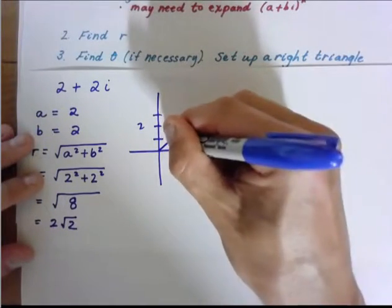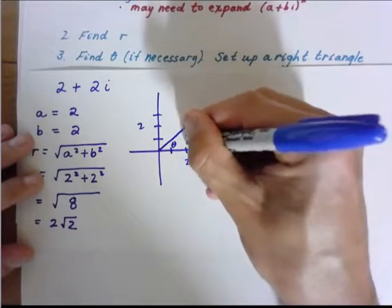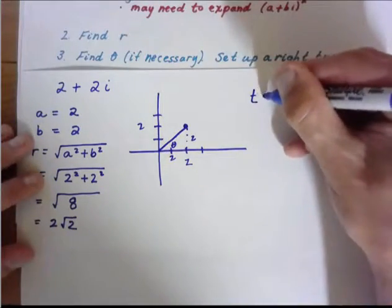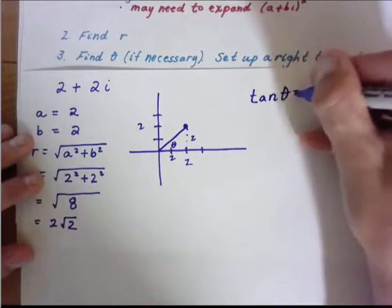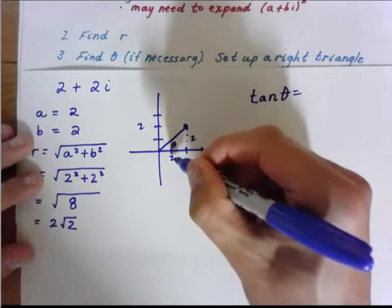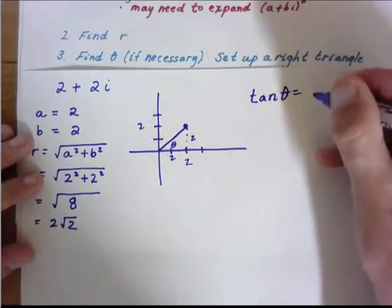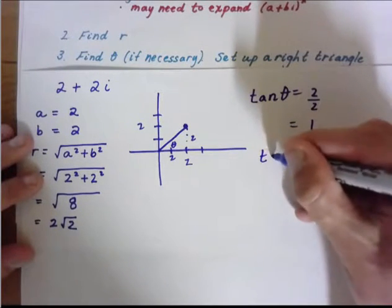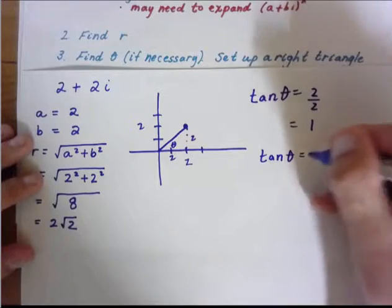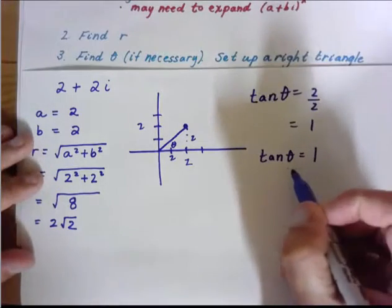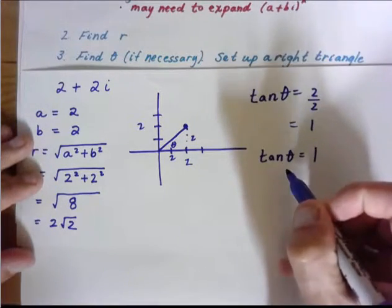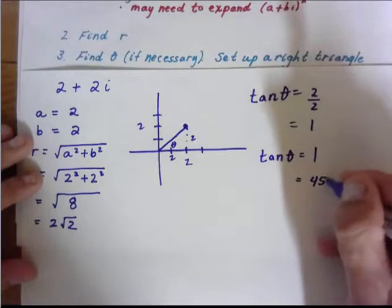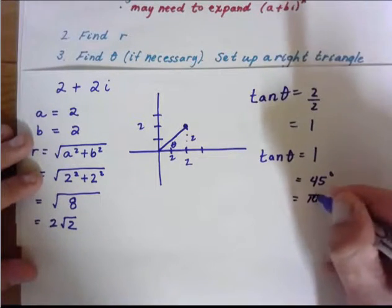So here's theta. So we have 2 and 2 here. So we're going to use the tangent of theta is equal to opposite over adjacent, which is 2 over 2, which is 1. So basically now you're asking, what angle of theta gives me a tangent of 1? Well, that's where cosine and sine are equal. So this is actually 45 degrees or pi over 4.